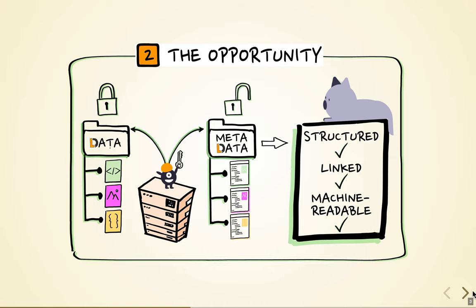Metadata provides not only high-level information about our research data, such as study and data acquisition parameters, but also the descriptive aspects of each file in the dataset, such as file paths, sizes, and formats. With this metadata, we can create an abstract representation of the full dataset that is separate from the actual data content. This means that the content can be stored securely while we openly share the metadata to make our work more FAIR.